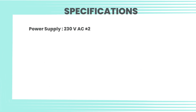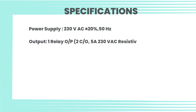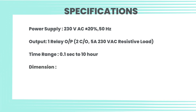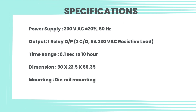Specifications — Power supply: 230 volt AC plus or minus 20 percent, 50 hertz. Output: one relay output, 2CO, 5 ampere, 230 volt AC resistive load. Time range: 0.1 seconds to 10 hours. Dimension: 90 by 22.5 by 66.35. Mounting: DIN rail mounting.